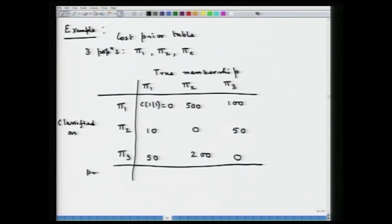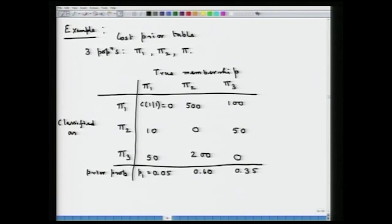Let us also have the prior probabilities. The prior probabilities of π₁, π₂, and π₃ are given by P(π₁) = 0.05, P(π₂) = 0.60, and P(π₃) = 0.35. The sum of these three is equal to 1, because we are assuming there are only three populations, i.e., c = 3.